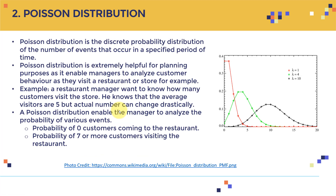The next distribution is the Poisson distribution. The Poisson distribution is a discrete probability distribution of the number of events that occur in a specific period of time. It's very helpful mainly for planning purposes, as it enables managers to analyze customer behavior — for example, how many customers visit a restaurant or store. Let me include a couple of examples to make this clearer.